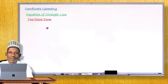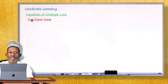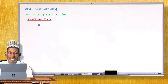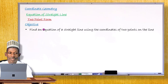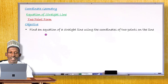Hello, my dear student. Welcome to another edition of your mathematics lesson. Today, in continuation with your main topic — coordinate geometry — and in continuation of finding or writing the equation of a straight line, we're going to take the third form, called the two-point form. After completing this lesson, you will be able to find or write an equation of a straight line using the coordinates of two points on the line.